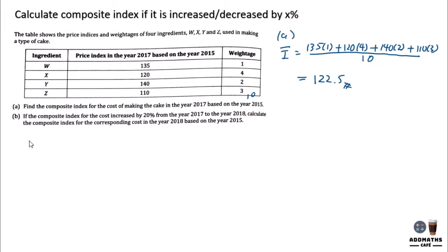For Part B, if the composite index for cost increases by 20% from 2017 to 2018, then the composite index for 2018 based on 2017 will be 120.